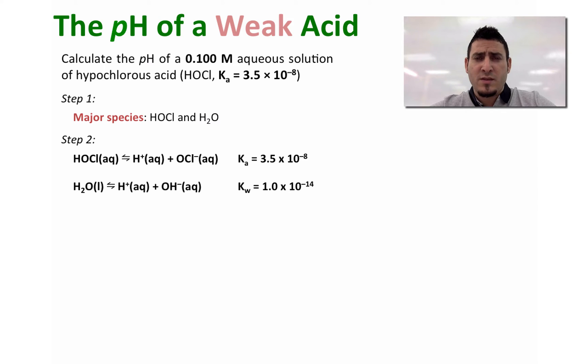Step 3: We need to determine which equilibrium will be determining the pH. Looking at the values of Ka and Kw, we can see that Ka is higher than Kw, and therefore the equilibrium that will be determining the pH is the dissociation of the weak acid.